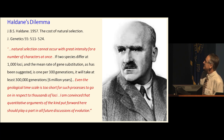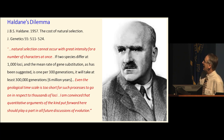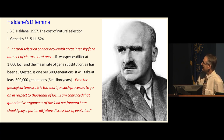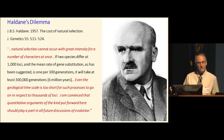Haldane says: 'Natural selection cannot occur with great intensity for a number of characters at once. If two species differ at a thousand different locations, the mean rate of generation substitution is one per 300 generations. It takes at least 300,000 generations, which is six million years, to get a thousand mutations fixed.' He says: 'Even the geological timescale is too short for such processes to go on in respect to thousands of loci. I am convinced that the quantitative arguments put forward here should play a part in all future discussions of evolution.' That's how profound he thought this problem was.